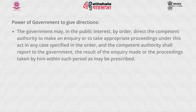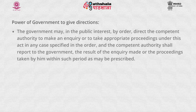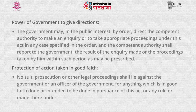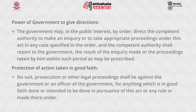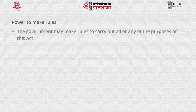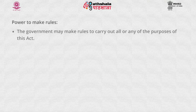Cognizance of Offences: No court shall take cognizance of an offence punishable under this act except on a complaint in writing made by an officer authorized by the government. Competent authority to be public servants: the competent authority appointed under Section 6 and the officer authorized under Section 8 shall be deemed to be public servants within the meaning of Section 21 of the Indian Penal Code. Power of government to give directions: the government may in public interest direct the competent authority to make an inquiry or to take appropriate proceedings under this act, and the competent authority shall report the result within the prescribed period. Protection of action taken in good faith: no suit, prosecution or other legal proceedings shall lie against the government or officer for anything done in good faith in pursuance of this act. Power to make rules: the government may make rules to carry out all or any of the purposes of this act.